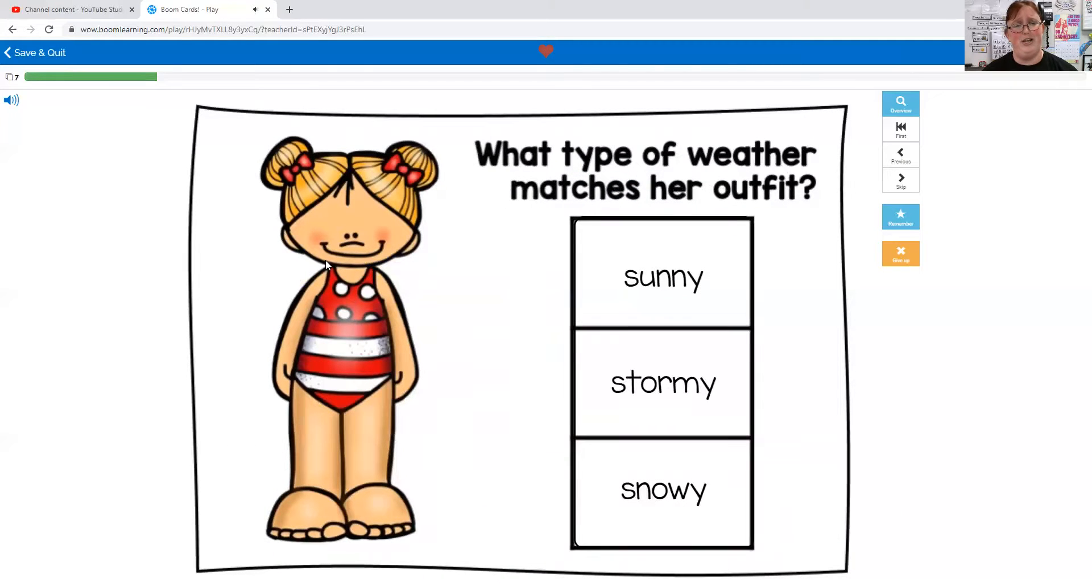What type of weather matches her outfit? Sunny, stormy, or snowy? She's wearing a bathing suit. We typically, unless we have an indoor pool or a heated pool, go swimming in the sun on sunny days and when it's hot, so sunny.